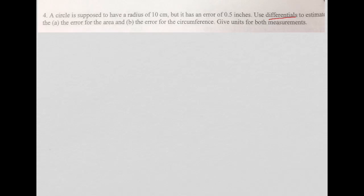Number 4 gives us some information about a circle. It has a radius of 10, with an error of 0.5. So that is going to be my delta R when I'm using differentials. This is going to be my R.